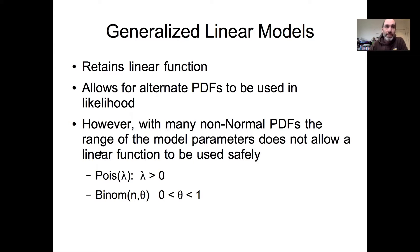For example, in the Poisson with lambda, that lambda can only be positive. In the binomial with theta, the probability term, that can only be bound between 0 and 1.